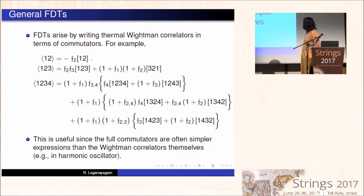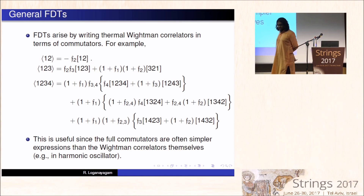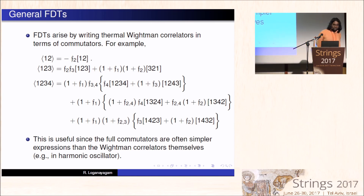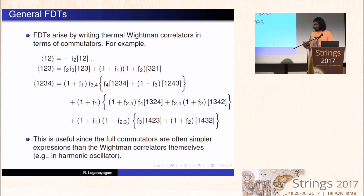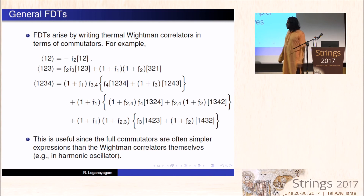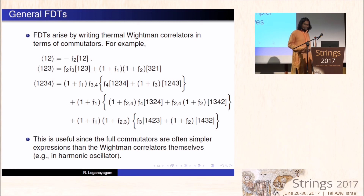For example, these are some of the fluctuation-dissipation theorems for three-point and four-point functions — they are actually much simpler and have much fewer terms than anything you will find in the literature for Schwinger-Keldysh correlators. Here, one is the future-most operator in the standard ordering, and the F's are basically the Bose-Einstein distributions — for example, F34 means Bose-Einstein distribution with omega-3 plus omega-4. What you find is basically some very simple relation like this. And these kinds of relations are begging for somebody to develop a kinetic theory such that one can show that systems actually go to equilibrium, and that in that equilibrium the correlators reduce to this particular form.